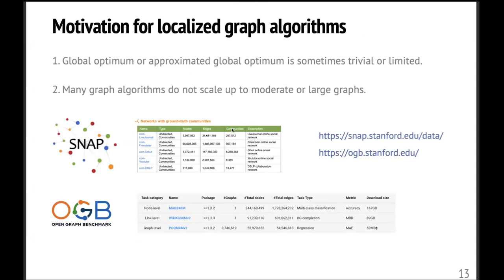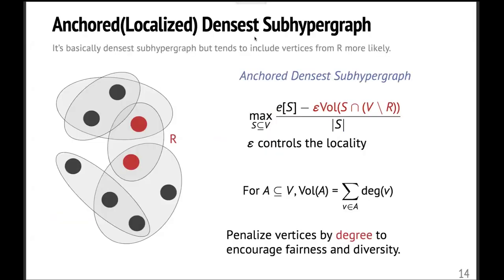And the second motivation is about computing complexity. So nowadays graphs are growing larger and larger and many graph algorithms, they do not scale up to moderate or large size graphs. So if we can design some localized graph algorithms which only pay attention to a local region, then potentially we don't have to visit the whole graph. Then we can make it super efficient.